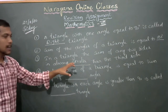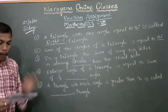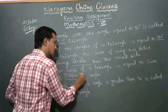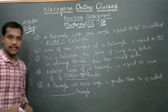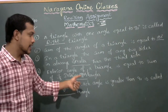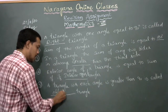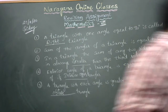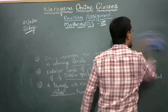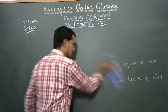Fourth one: the exterior angle of a triangle is always equal to the sum of its two interior opposite angles. Fifth one: a triangle with each angle greater than 90 degrees is called an obtuse-angled triangle.